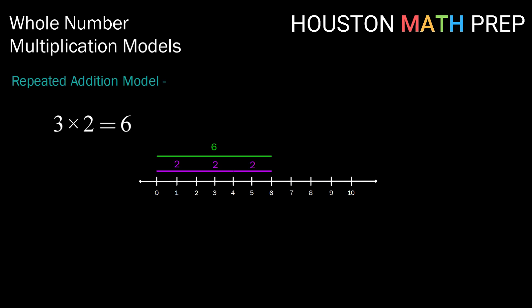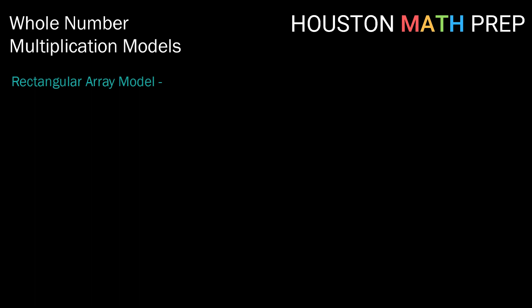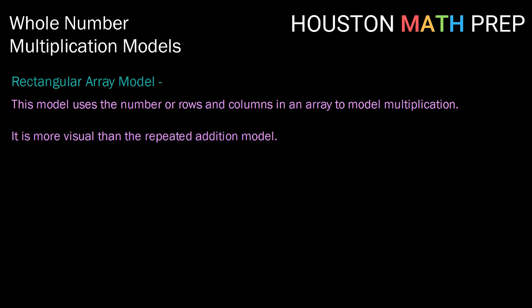So 3 times 2 is 6. So those are two ways of looking at the repeated addition model. Another model for whole number multiplication is the rectangular array model. This model uses the number of rows and columns in an array to model multiplication.